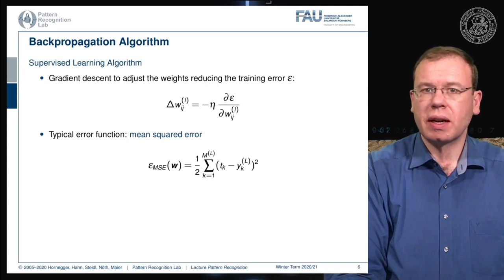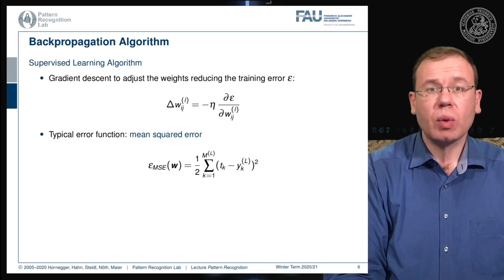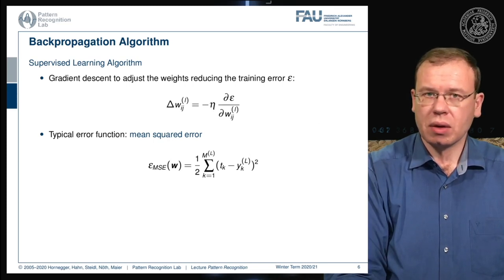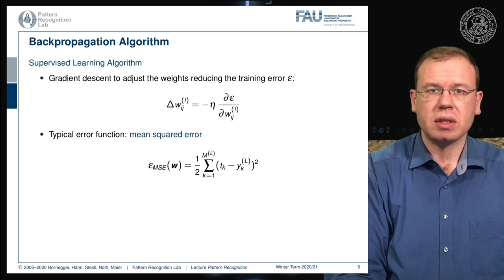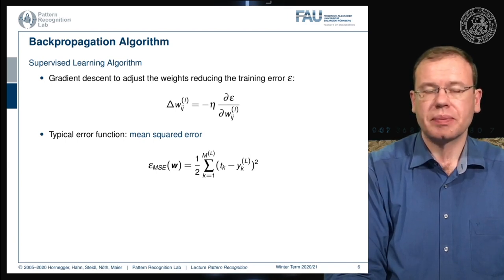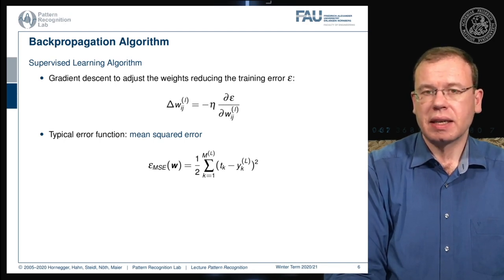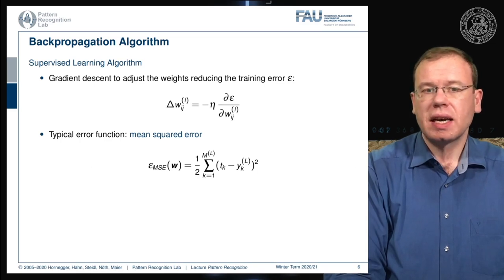We choose the mean squared error as the loss function, though many other loss functions are available — see the deep learning lecture for details. We have some target t_k and compare it to the output of the last layer, take the square, and sum over all outputs to get the mean squared error.